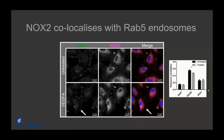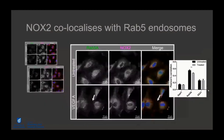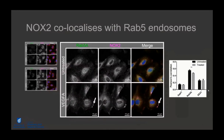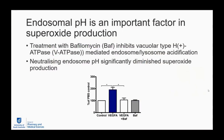We see EEA1 co-localizing with VEGFR2, and when we inhibit uptake using dynasore and pit-stop — which inhibit endocytosis through various means — we saw a decrease in that co-localization. We can measure the capacity of VEGFR2 to stimulate superoxide production: superoxide increases with 30 and 100 nanograms per mL of VEGF ligand, over 0 to 30 minutes. NOX2 co-localizes most significantly with RAB5 endosomes. Endosomal pH is important for superoxide production — treating with bafilomycin, which inhibits vacuolar V-ATPase and mediates endosomal acidification, neutralizes endosomal pH and significantly diminishes superoxide production.